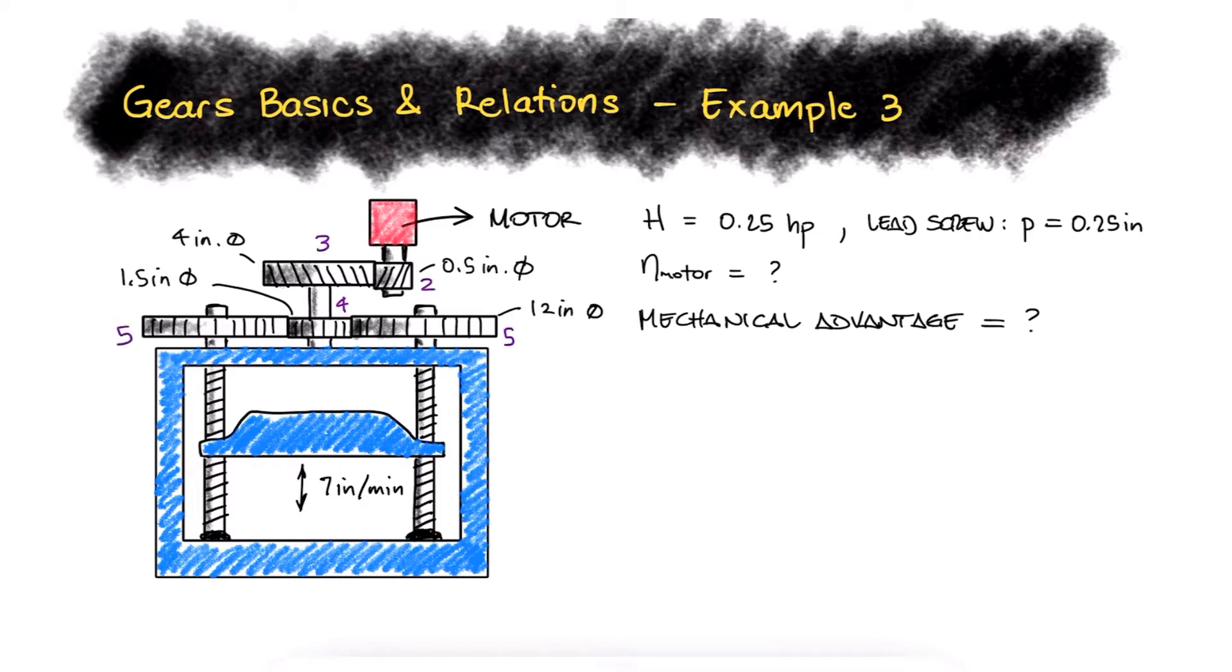As usual, we'll begin by labeling the gears and notice that both gears for each lead screw are labeled as gear 5 since they need to rotate at the same speed and deliver the same amount of torque.